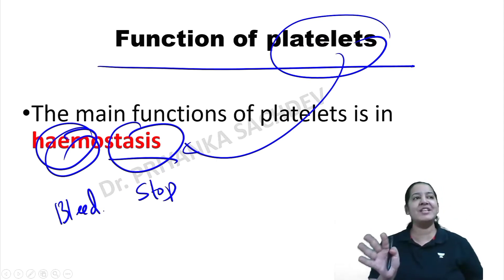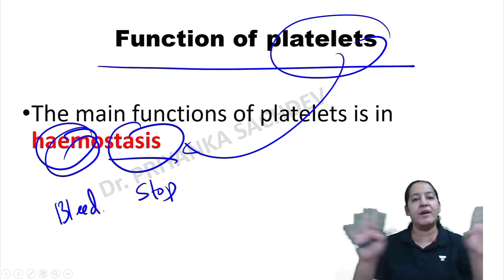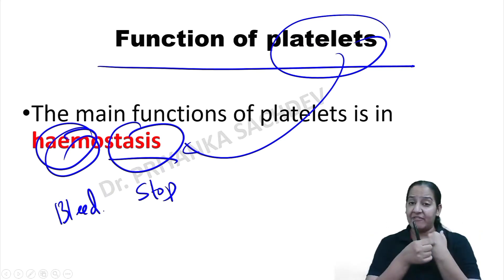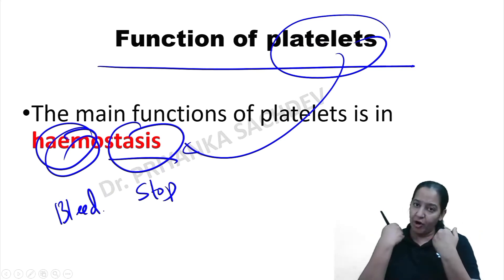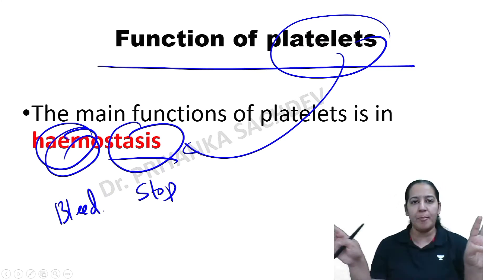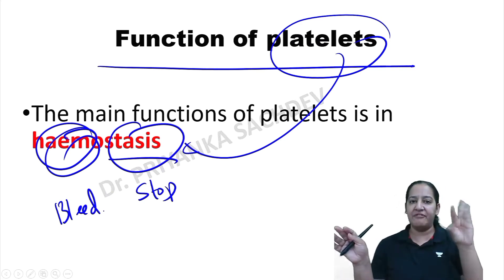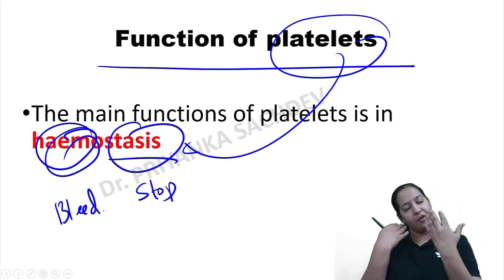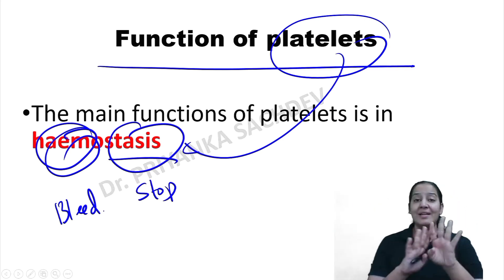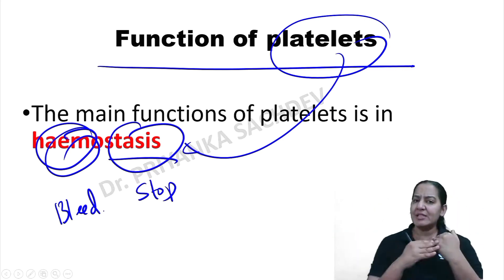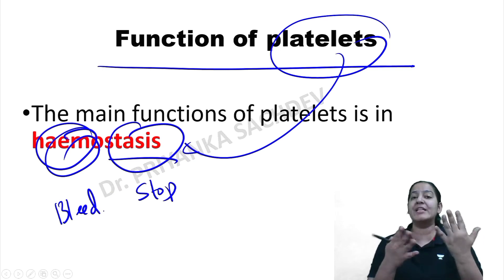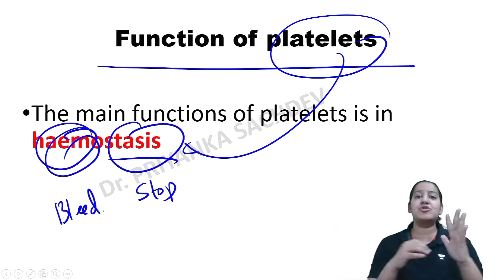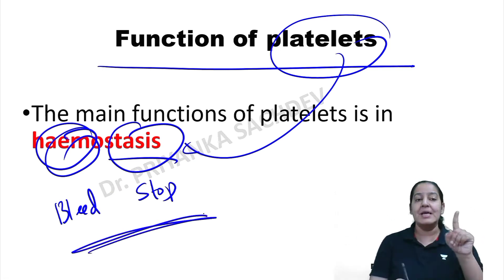That is the main function of platelets. Imagine if there were no platelets in human blood — someone with a cut or injury would bleed continuously and bleeding would not stop automatically. The 5 litres of blood present in the body would bleed out in the next few seconds or minutes. All persons have automatic stoppage of bleeding, and that is known as hemostasis.